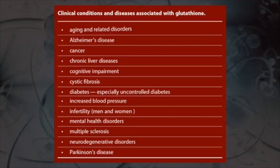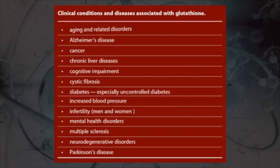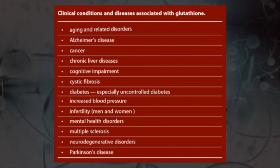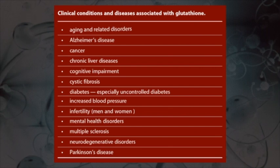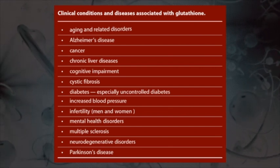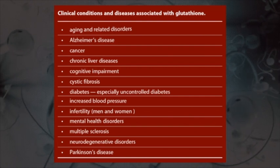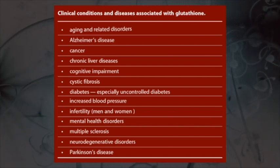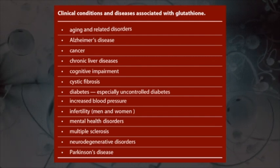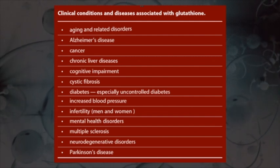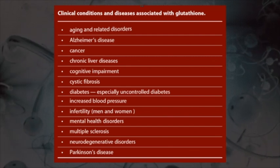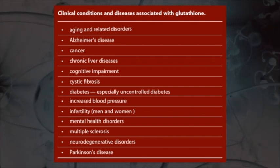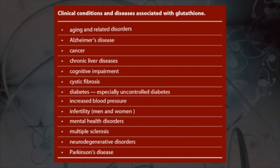Here are some clinical conditions and diseases associated with reduction or unavailability of glutathione: aging and related disorders, Alzheimer's disease, cancer, chronic liver diseases, cognitive impairment, cystic fibrosis, diabetes (especially uncontrolled diabetes), increased blood pressure, infertility in both men and women, mental health disorders, multiple sclerosis, neurodegenerative diseases, and Parkinson's disease. This is actually a very short list.